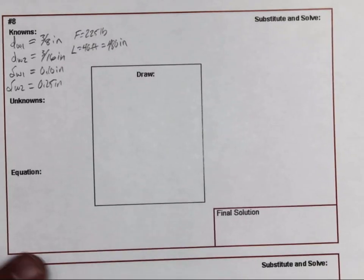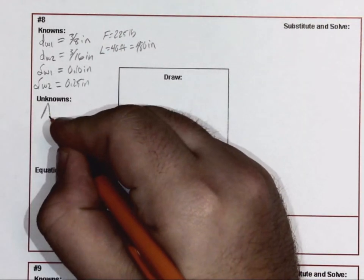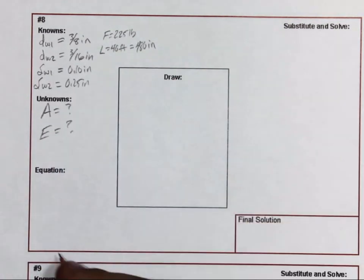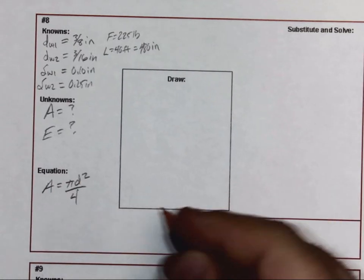So let's go ahead and move to the sheet. Unknowns: let's go ahead and say we don't know what the area is, and we don't know what the modulus of elasticity.